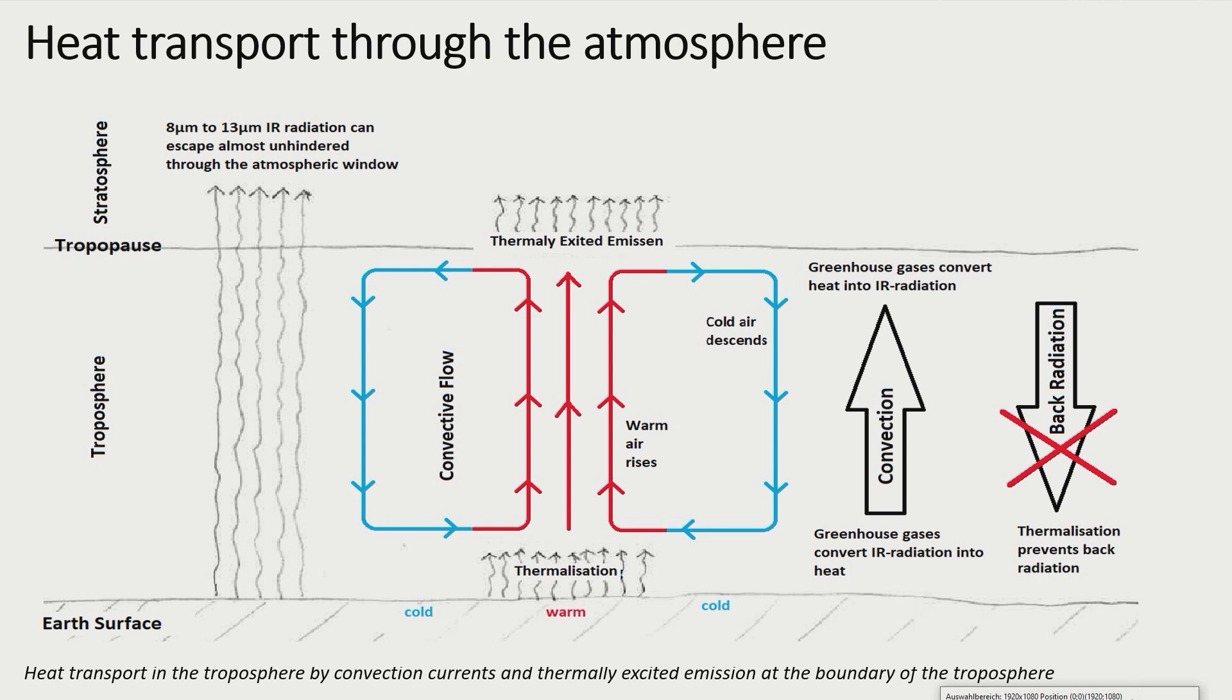These convection flows transport the heat up to the boundary layer of the troposphere. Under the low pressure of the high altitudes, thermally excited emission becomes the dominant process, since collisions between gas molecules become less frequent.